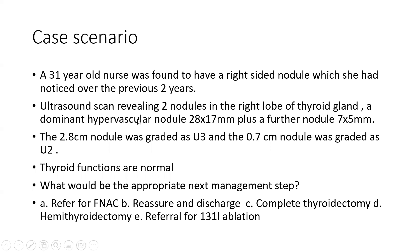The dominant nodule she has noticed over the last two years is approximately 2.8 cm — it is hypervascular, measuring 2.8 by 1.7 cm. There is also a smaller nodule measuring 7 by 5 mm. The 2.8 cm nodule was graded by the radiologist as U3, and the 7 by 5 mm nodule was graded as U2. Thyroid function in this patient was normal. What will be the most appropriate next management? Should we refer for FNAC, reassure and discharge, proceed to total thyroidectomy, do a lobectomy, or refer for radioiodine ablation?